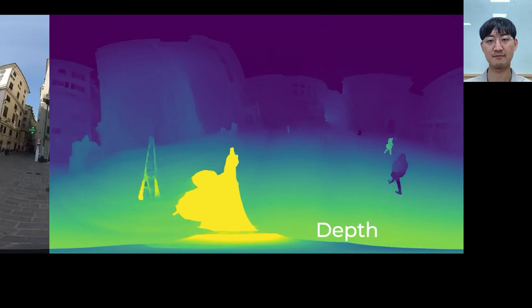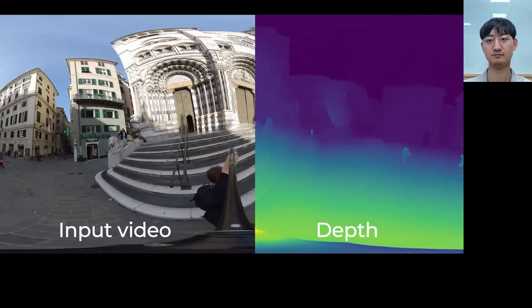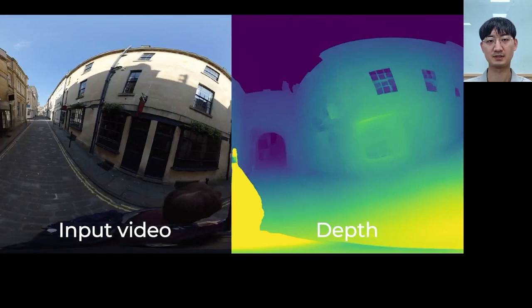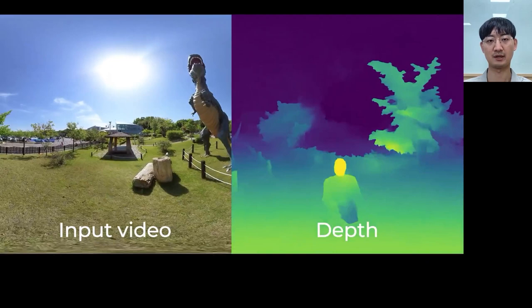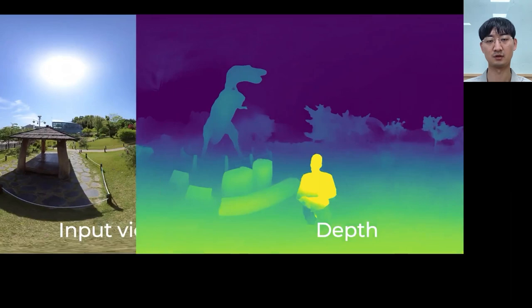This is one of our input videos and the corresponding depth maps. Our input video camera trajectories are much smaller than the target scene. And the shape of the camera trajectory is not restricted. It can be circular or any other unconstrained trajectory.